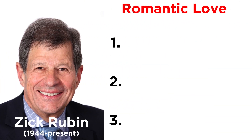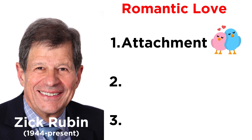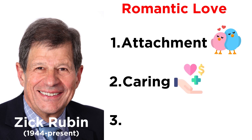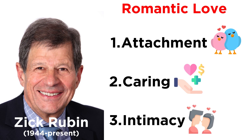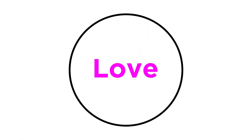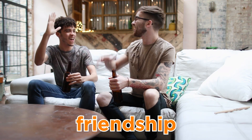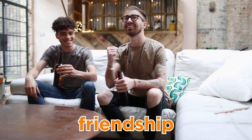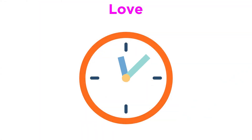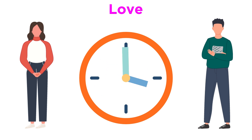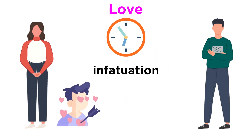Psychologist Zick Rubin considers romantic love to be comprised of three elements: attachment, or the need to be with another person and desiring their physical contact and approval; caring, or valuing the other person's needs and wants as much as your own; and intimacy, or sharing private thoughts and desires with another person. Not all love is the same as passionate and romantic love, and these other types of love are just as important. For instance, you might love someone as a close friend. Friendship is marked by liking someone and having some form of intimacy. Love can also change with time. When you first start a romantic relationship, you may experience infatuation — you are extremely attracted to a person, but don't have a sense of commitment yet.